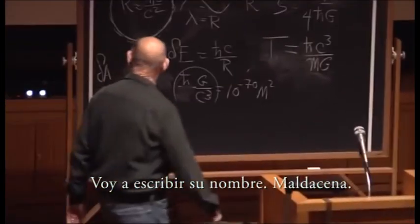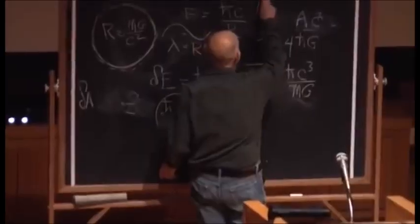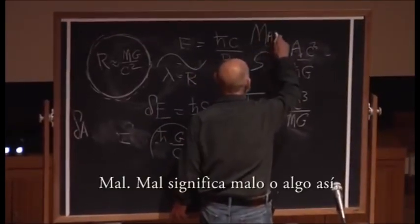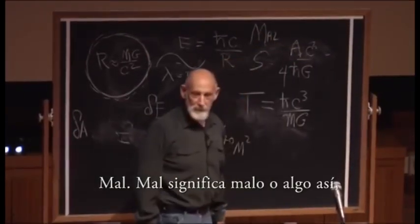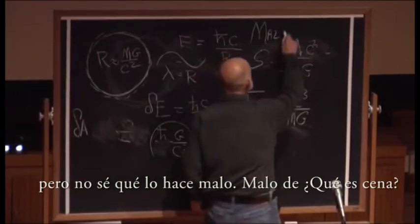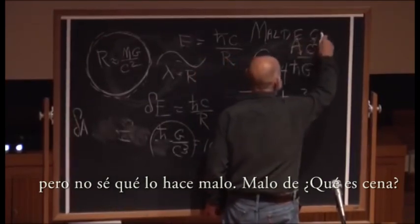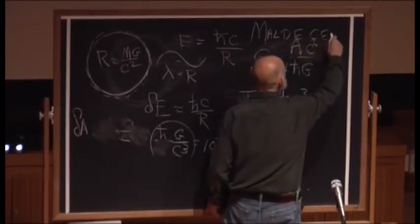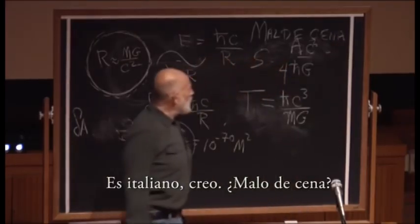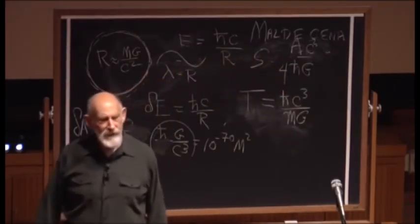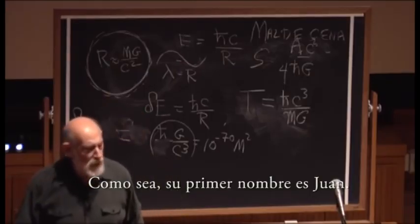I'm going to write his name: Maldacena. 'Mal' stands for bad or something — bad of Sena? It's Italian, I think. Bad of Sena? Anyway, his first name is Juan.